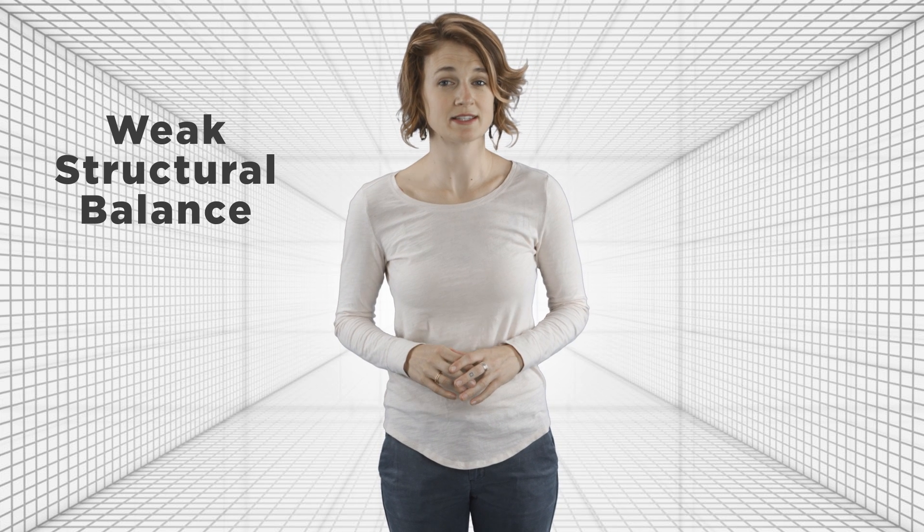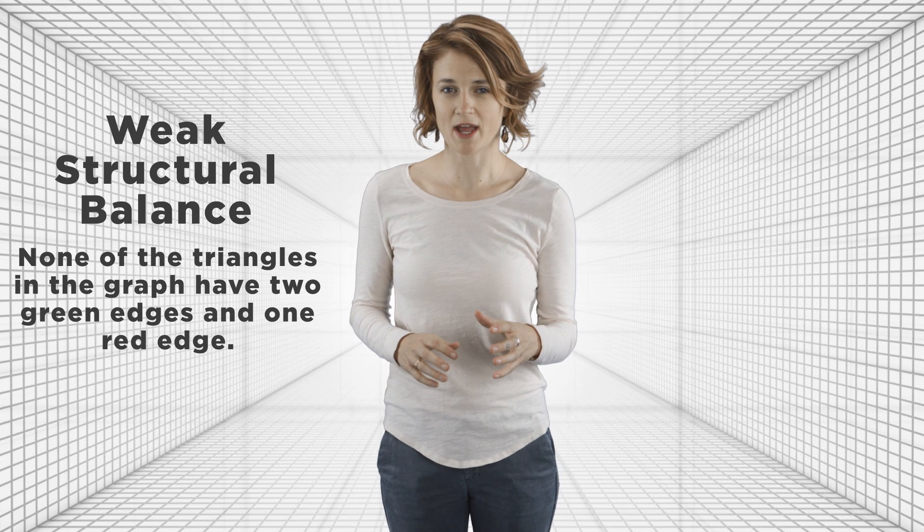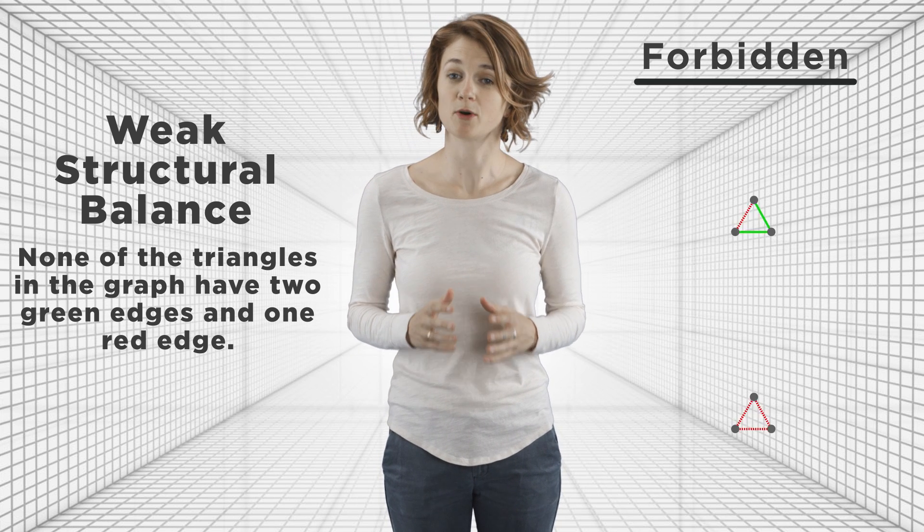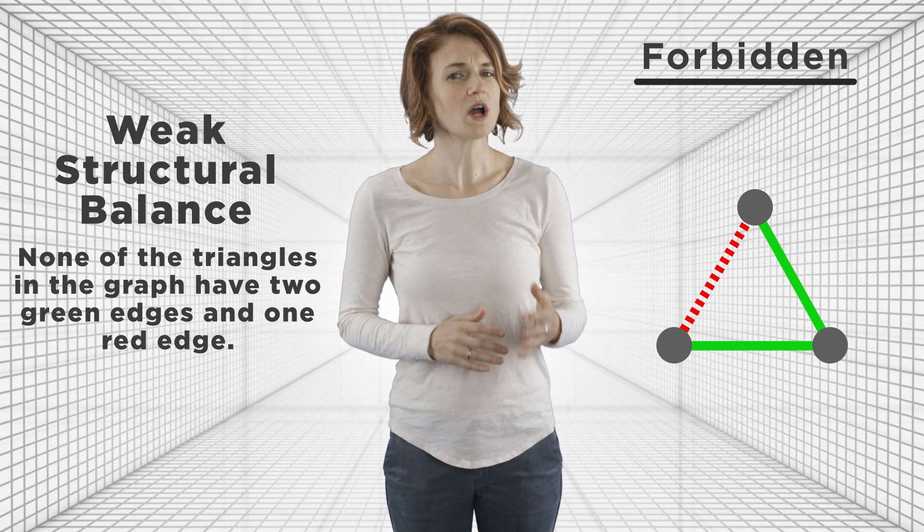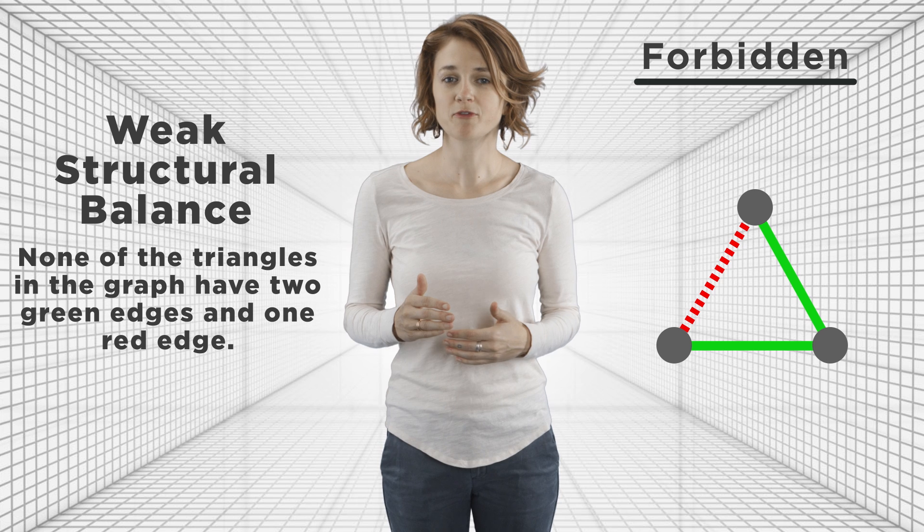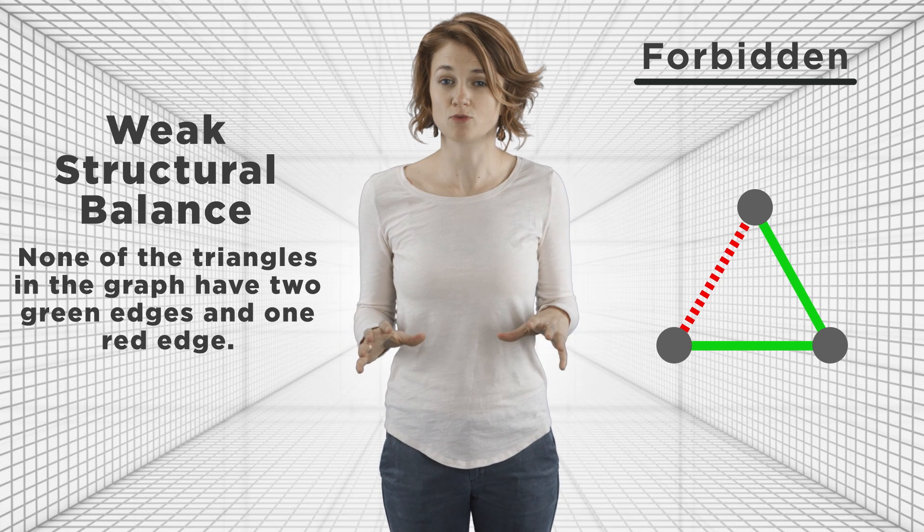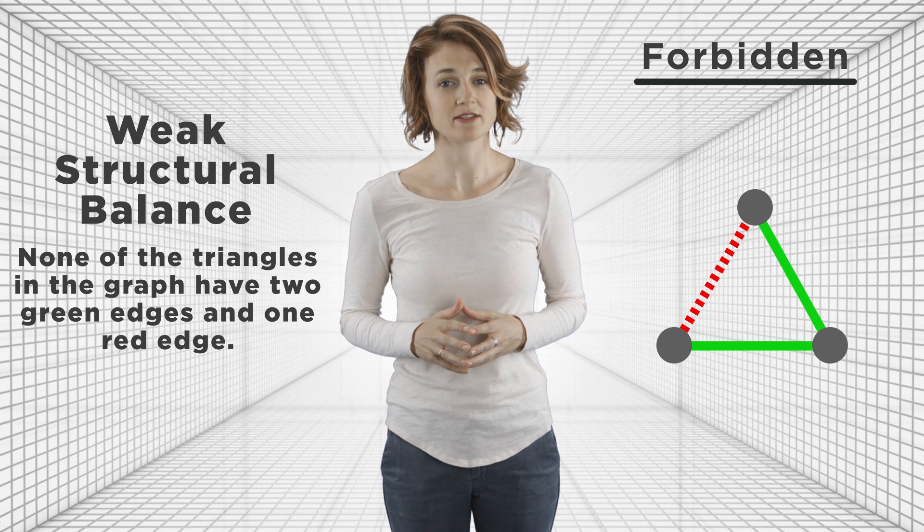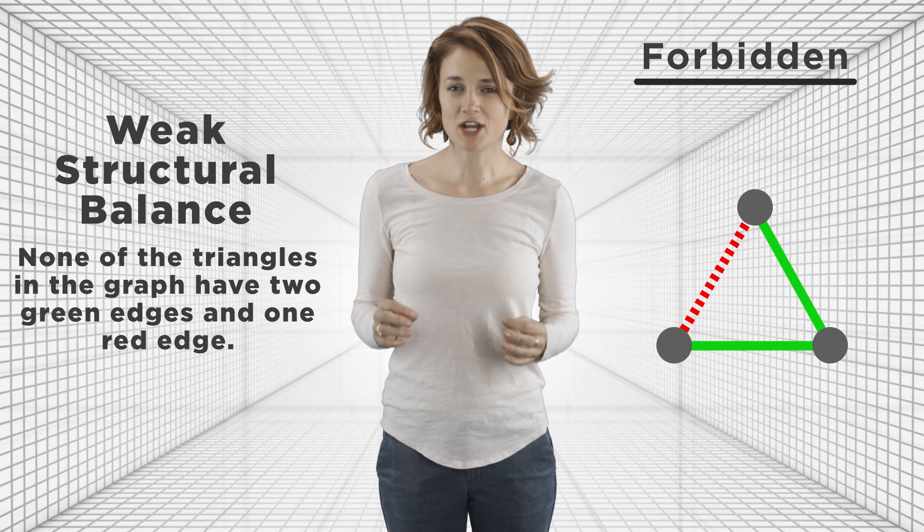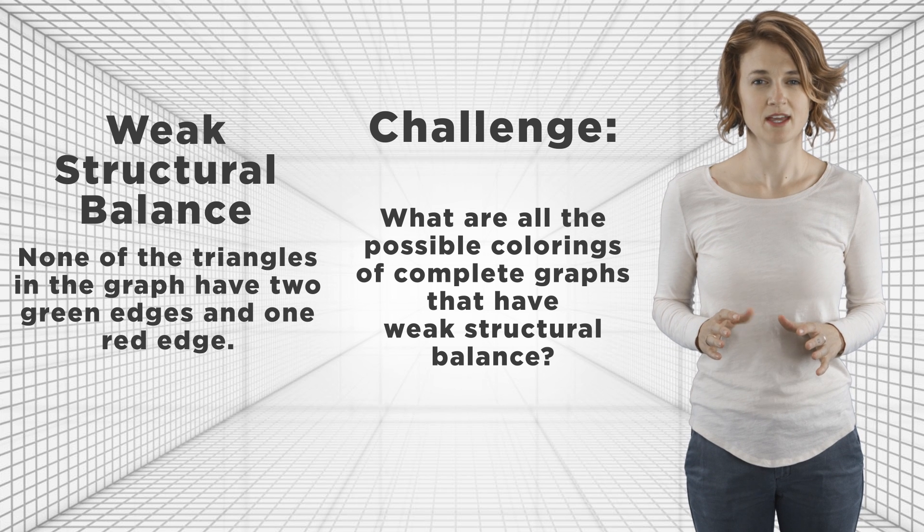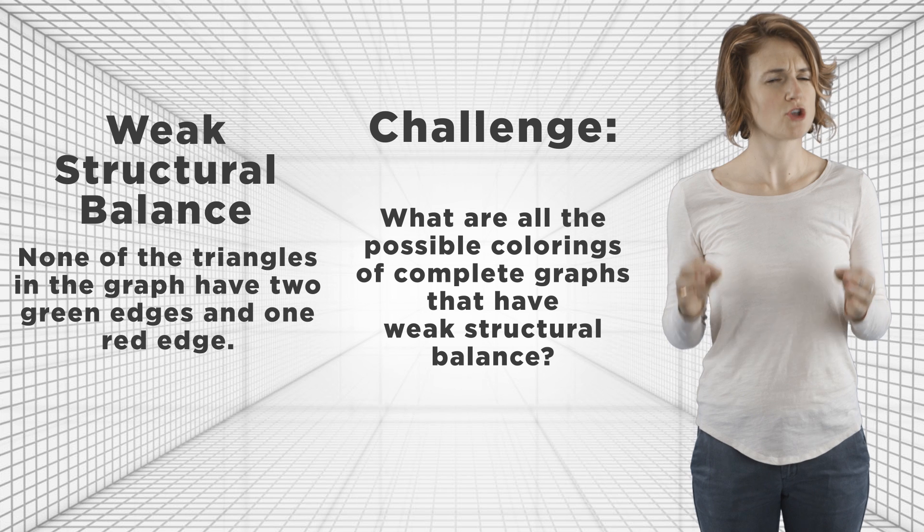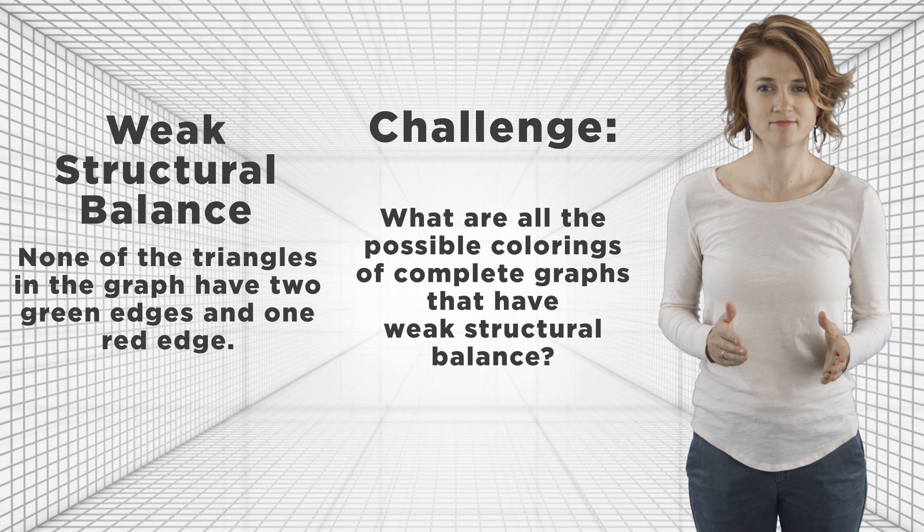And just for fun, what happens if we tweak the definition of structural balance? Let's define a complete graph to have weak structural balance if none of the triangles in the graph have two green edges and one red edge. In our previous definition of structural balance, we forbid both of these triangles. But now, we only forbid this triangle. Under this weaker definition of structural balance, what colorings of the complete graph are balanced? Just like before, everyone can be friends, or they can split into two rival groups. But this weaker definition of structural balance also allows some other possibilities. Here's your challenge problem for the week. What are all the possible colorings of complete graphs that have weak structural balance? In other words, how can we color a complete graph so there is no forbidden subtriangle? Two green and one red. Can you prove your guess? Leave your answer in the comments.